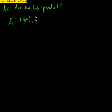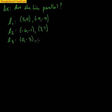Let's look at an example involving finding slopes and seeing if lines are parallel. Here's the first example we'll look at. And the question is, are the lines parallel? I'll give you three lines. Line one goes through the points (5, 4) and (-4, -4). Line two goes through the points (-6, -1) and (3, 7). And line three goes through the points (0, -3) and (1, -2).